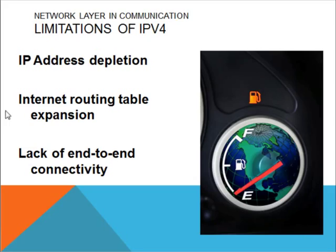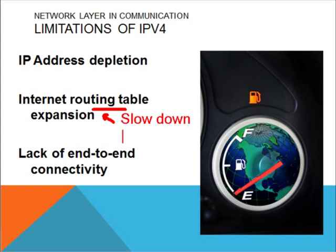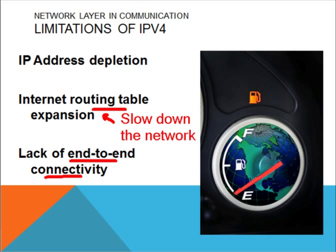The main problem with the IPv4 network is that it is going to be depleted because we are going to run out of IP addresses. The internet routing table is getting too large, and when it is too large, it will slow down the network. IPv4 also has technical issues such as the inability to connect end-to-end between different devices. These are the disadvantages of the IPv4 protocol.